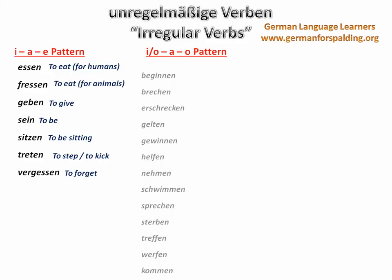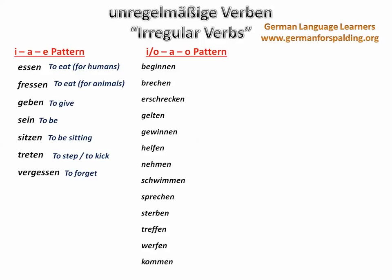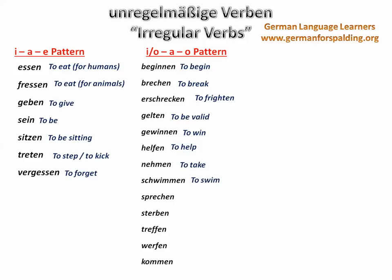Our next pattern is the E and O to A to O pattern. These verbs are: beginnen, to begin; brechen, to break; erschrecken, to frighten; gelten, to be valid; gewinnen, to win; helfen, to help; nehmen, to take; schwimmen, to swim; sprechen, to speak; sterben, to die; treffen, to meet; werfen, to throw; and kommen, to come.